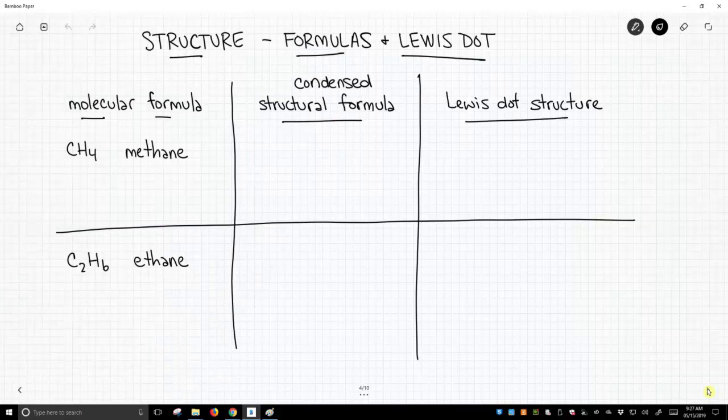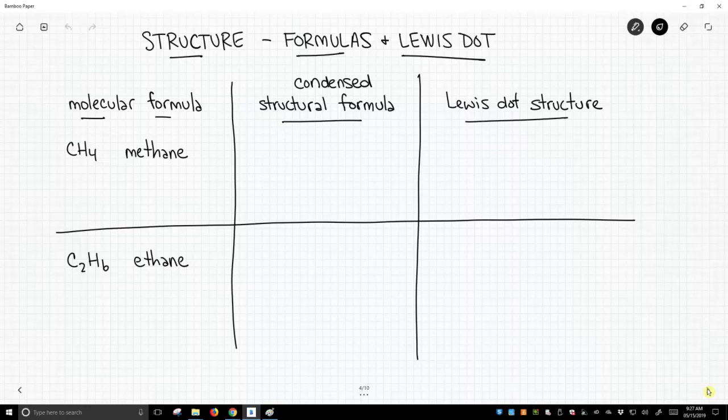There are three columns on this slide: one for molecular formula, one for condensed structural formula, and one for Lewis dot structure. We're going to look at two very simple molecules and fill in this table.